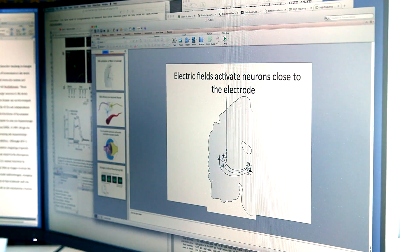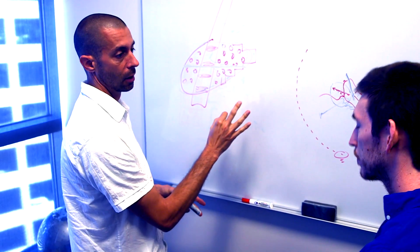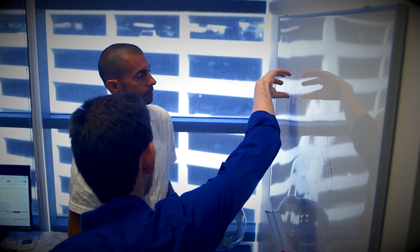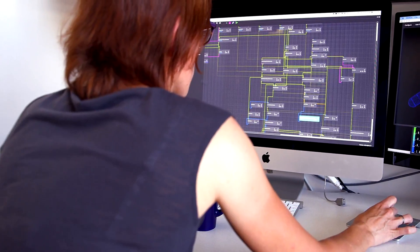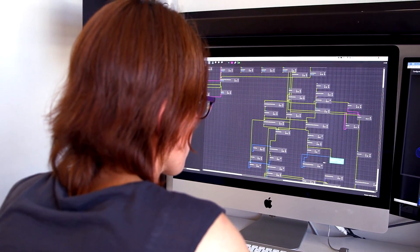I want to figure out how to take that map and put it into clinical practice. We've been calling this connectomic neuromodulation. If we know what the maps are and what circuits in a given disorder are dysfunctional, we can use that to tell us where to put the electrodes to best treat that particular disease.